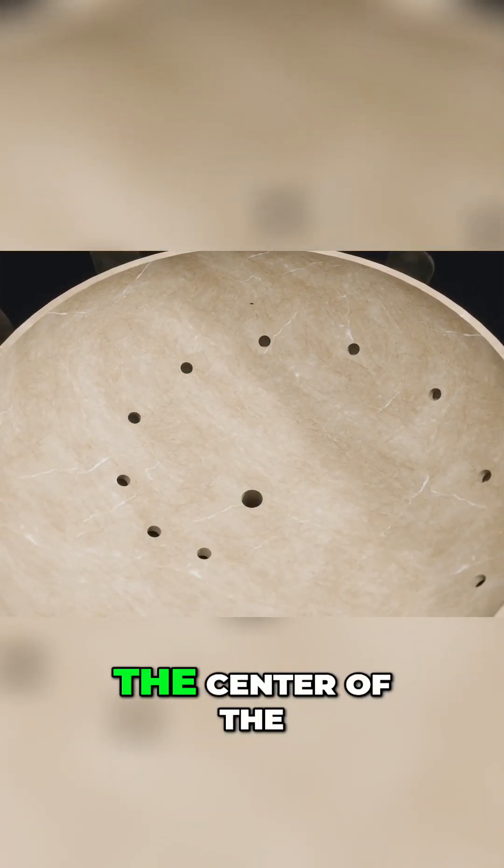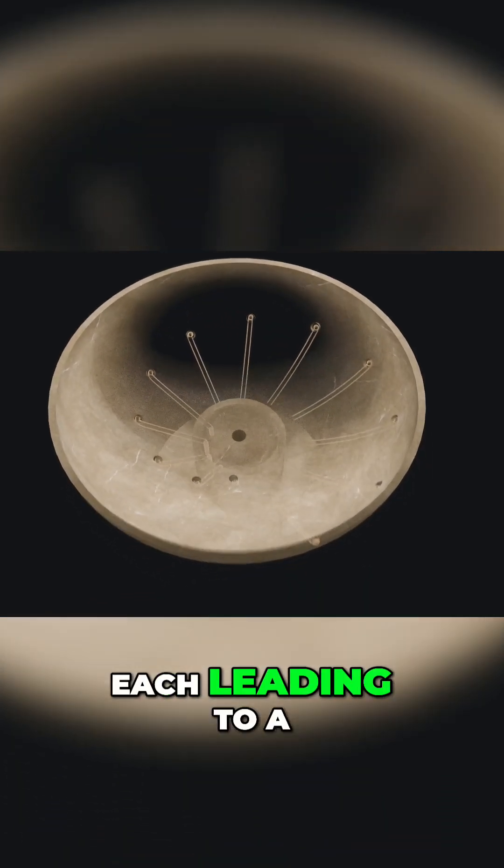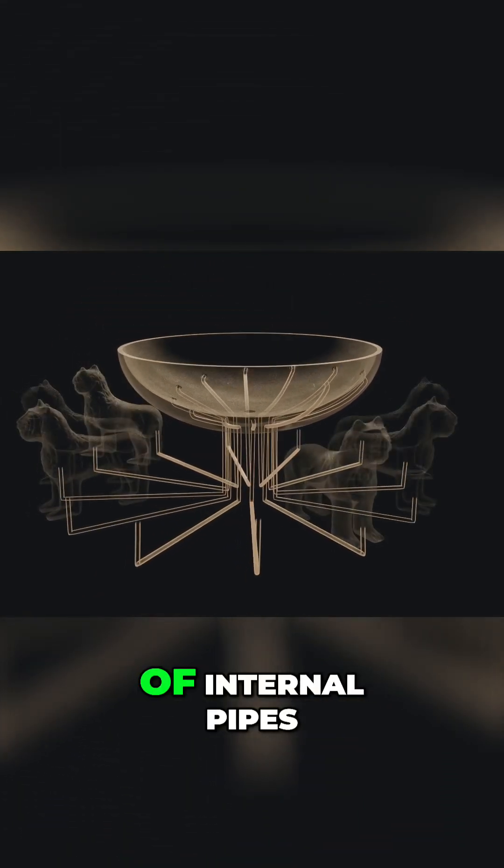The large bowl in the center of the fountain had 12 holes placed at very specific heights, each leading to a lion via a series of internal pipes.